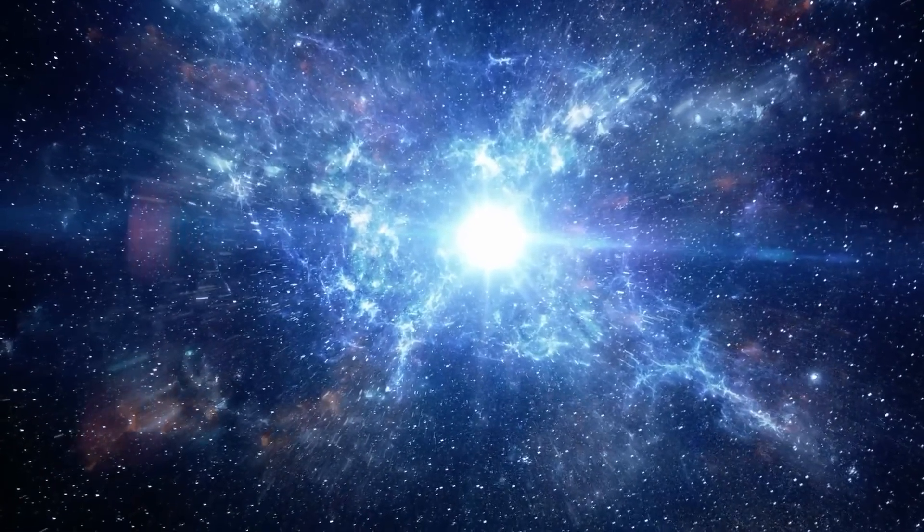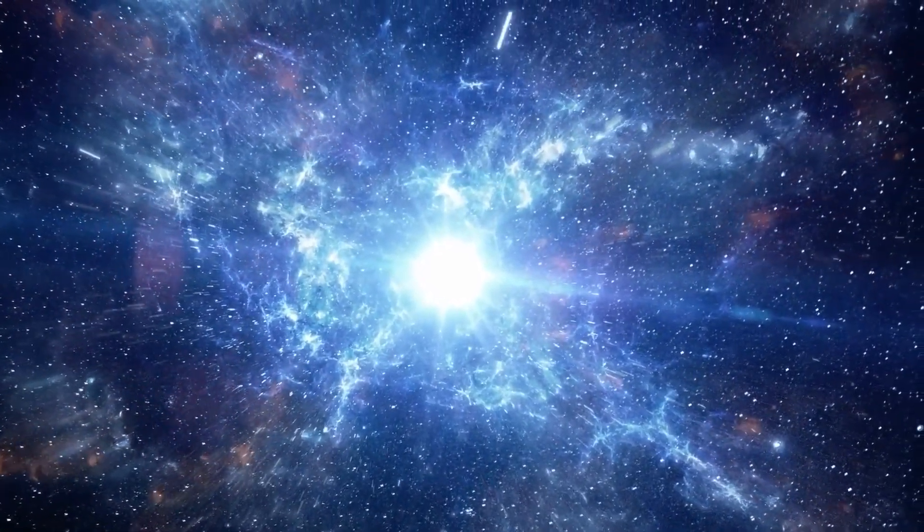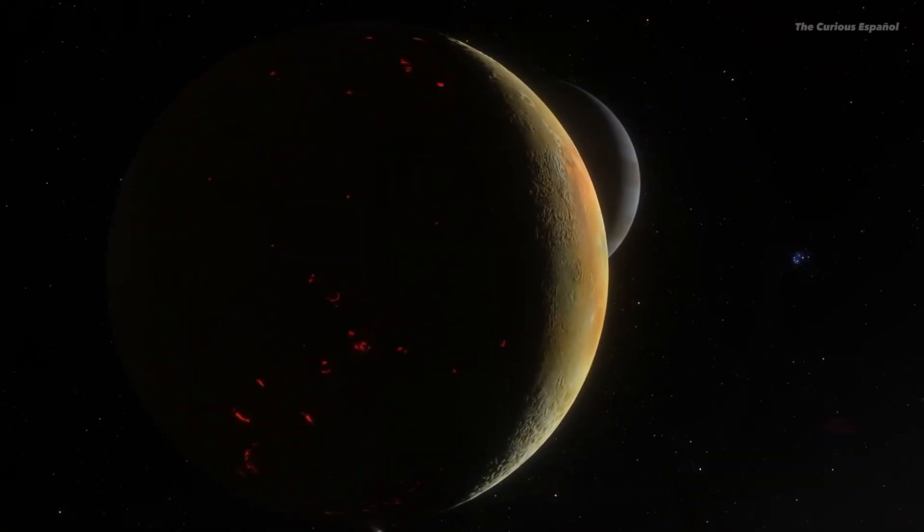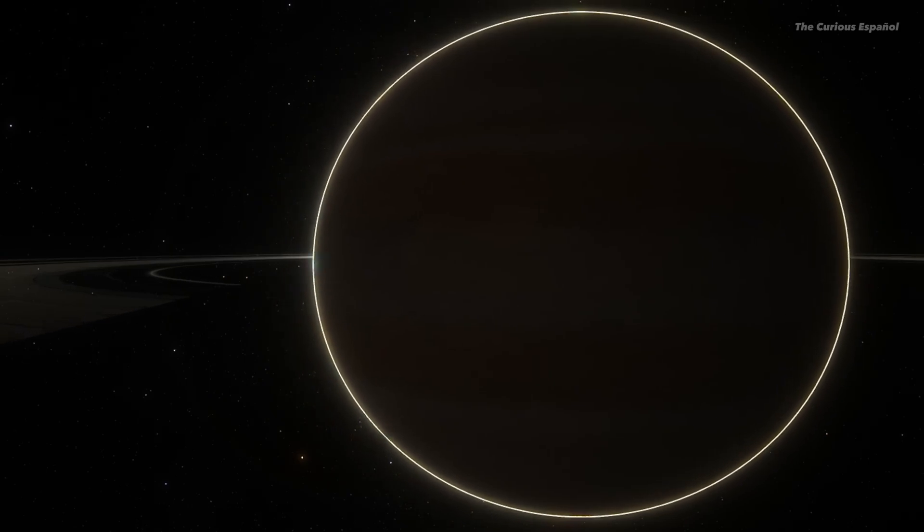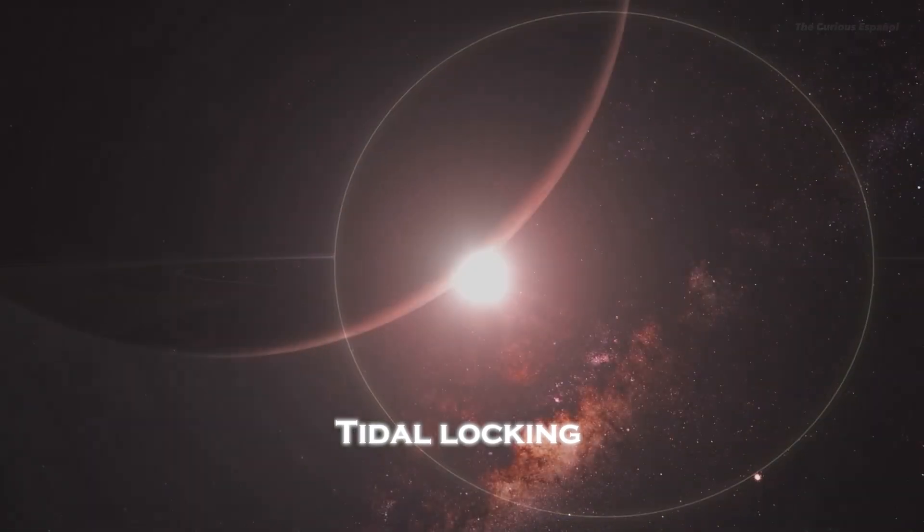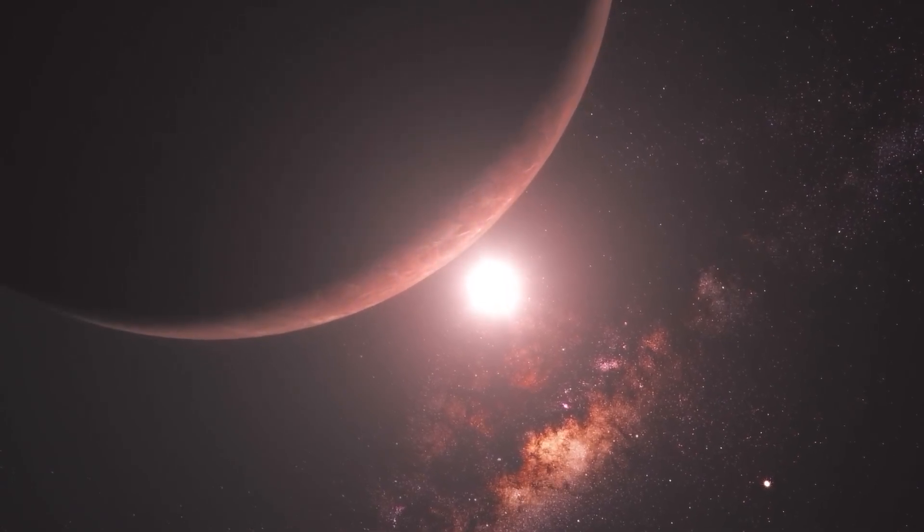The star's cool temperature provides a stable environment, reducing the risk of extreme radiation. However, the planet's proximity to Trappist-1 means they experience tidal locking. One side permanently faces the star, while the other remains in perpetual darkness.